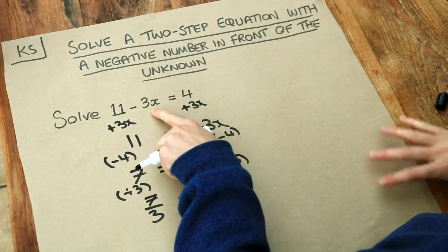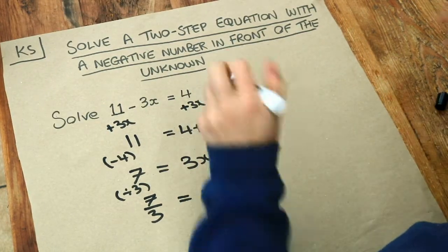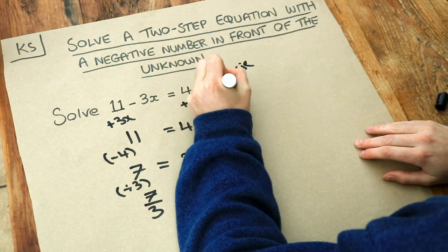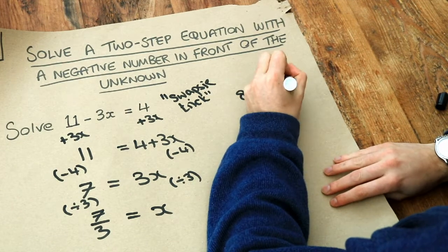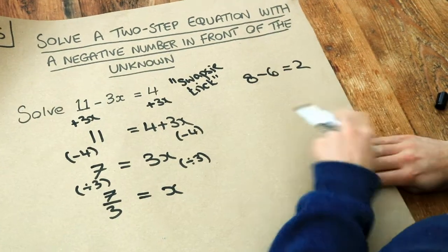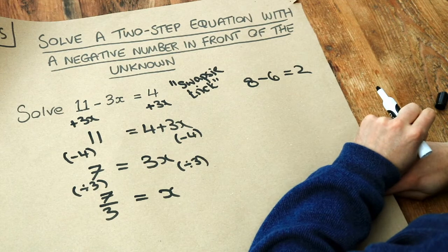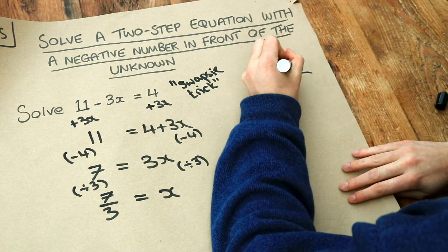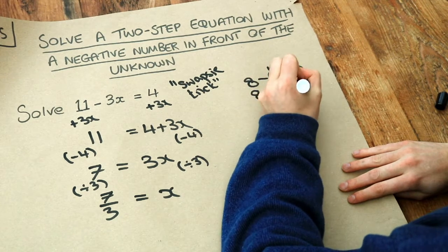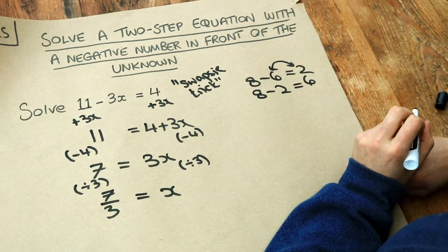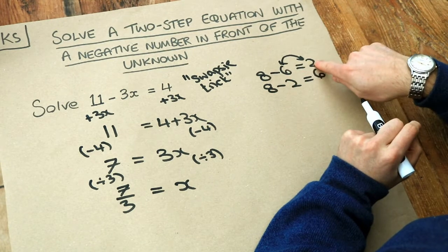Now I actually like to do this in one step, using something called the swapsy trick, as I call it. And what the swapsy trick is this. Let's say you had 8 minus 6 is equal to 2. That is obviously true. What two numbers in that subtraction could you swap so it would still be true? We could swap the 6 and the 2. So we'd have 8 minus 2 is 6. And that's clearly also true. So in general, we can swap the thing that's being subtracted and the result.